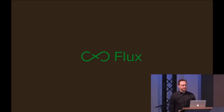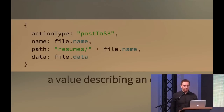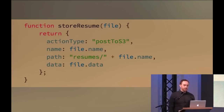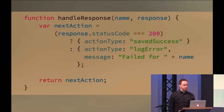Flux, Redux, and the Elm Architecture all have interesting things to say about this. You have actions — a value that describes an effect, not the effect itself. It's just data describing what we want done. Action type is `postToS3`, with a name (`file.name`), a path (the resumes folder), and data (`file.data`). We can write `storeResume` in terms of this: still taking a file, but now returning this description of what we want done. `handleResponse` similarly takes a name and a response and returns another action — a `savedSuccess` action or a `logError` action depending on the status code.